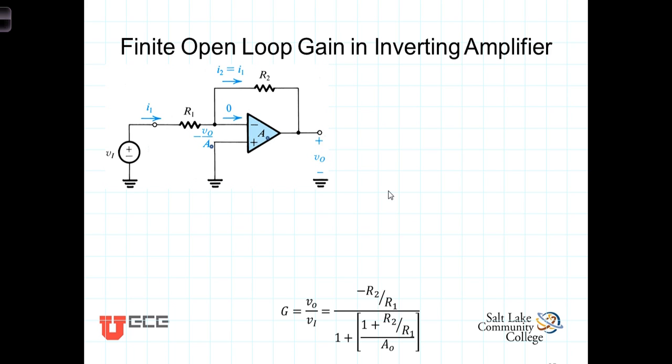In this video, we look at the effect of a non-infinite open loop gain on the inverting amplifier. In other words, we're going to be looking at the inverting amplifier configuration, only now instead of having A0 be infinite, it's going to be some number less than infinity, probably still large, but less than infinity.